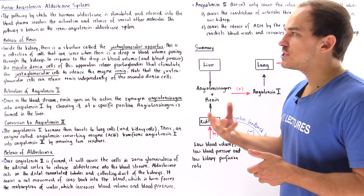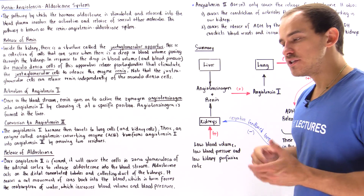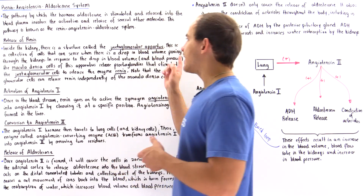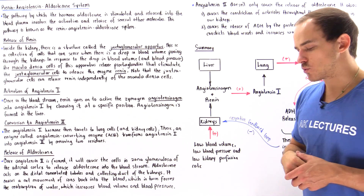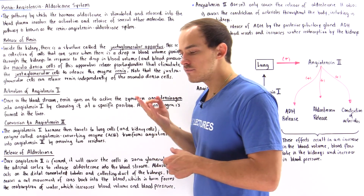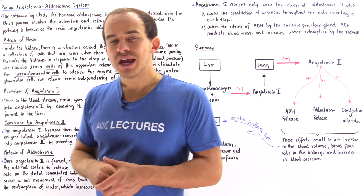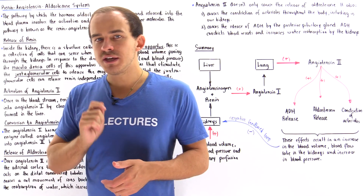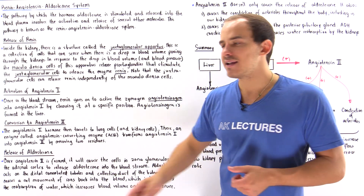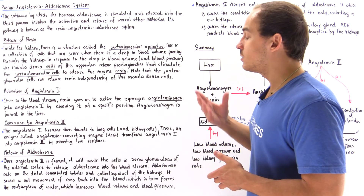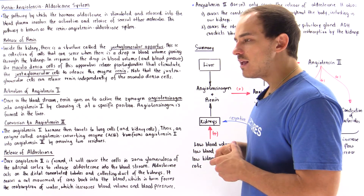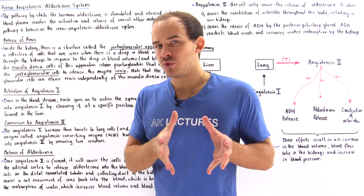Let's discuss how this pathway actually works, beginning with a portion of the kidney known as the juxtaglomerular apparatus. This is a structure that consists of three different types of cells. Two of these are the macula densa cells and the juxtaglomerular cells, and these two different types of cells each have their own unique function.